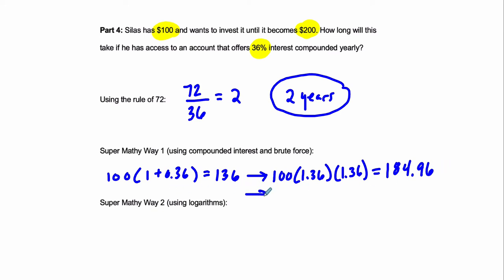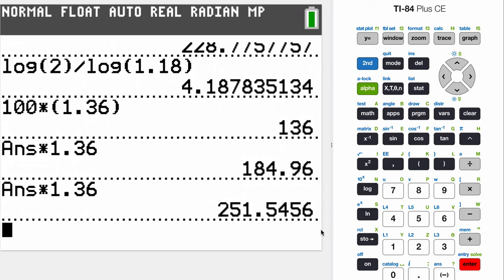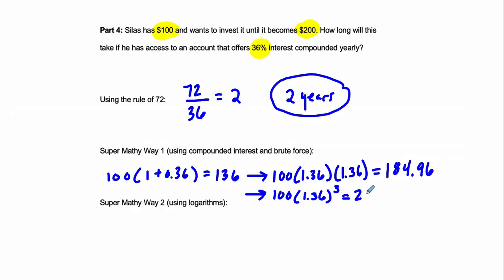So I'm going to write this down here. 100 times 1.36, not one time for the first year, two times for two years, but three times. And that will go over doubling. Again, we saw this earlier. So in this case, you can say something a little bit better than the rule of 72. You can say it's between two and three years. That's what you can say. So that's different, right? The answer is changing.